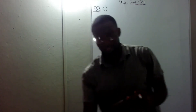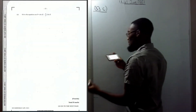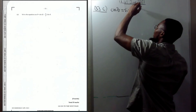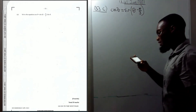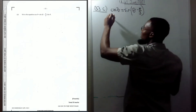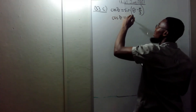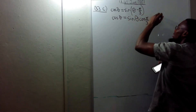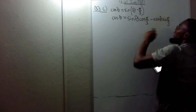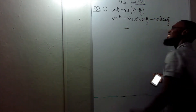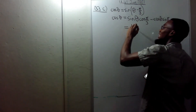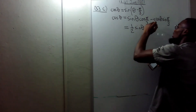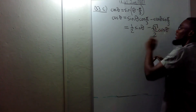Part C: solve cosθ = sin(θ − π/3). Expand the right side: sin(θ)cos(π/3) − cos(θ)sin(π/3). cos(π/3) = cos(60°) = 1/2, so this becomes (1/2)sinθ − (√3/2)cosθ = cosθ.